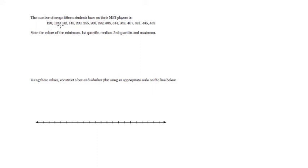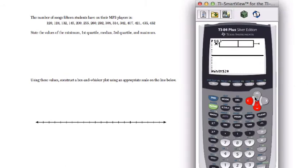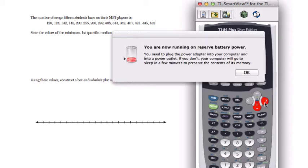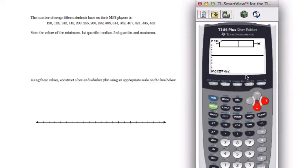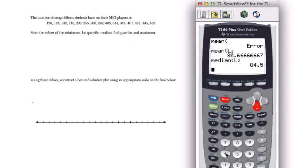The minimum value is 120, I believe. Let me just go back to my calculator and check. All right, it is 120. And we have to go up to what number really quick? 452. 120 to 452. So let's quit this.